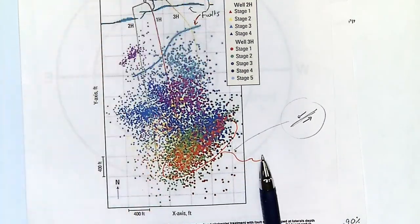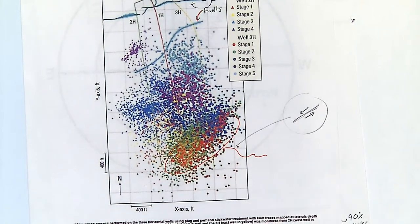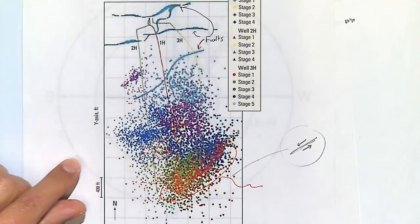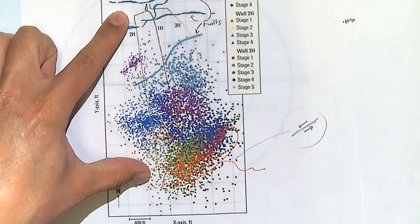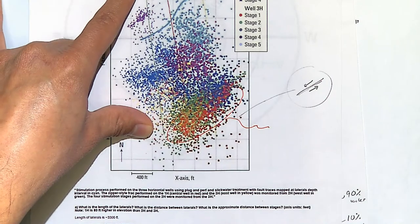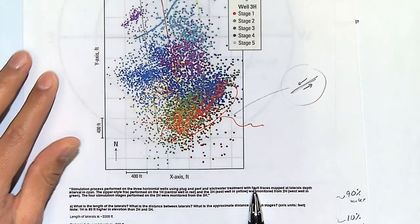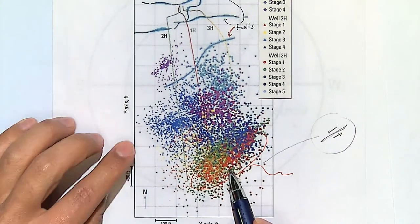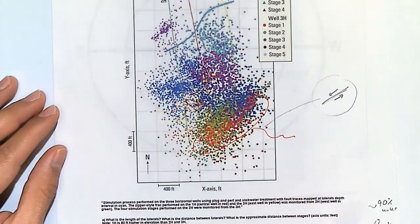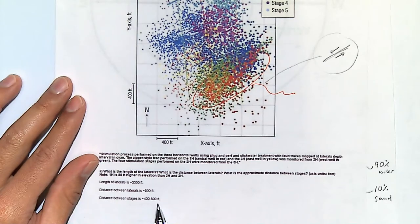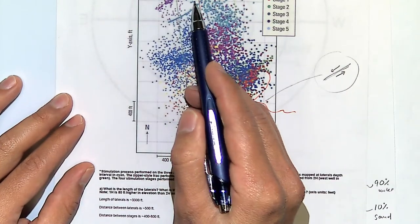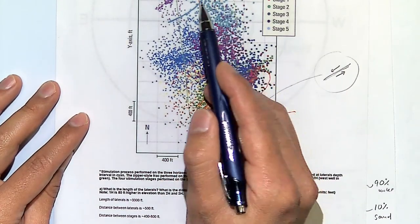The effective stimulation is mostly at the ends of the laterals. The length of the laterals, if this 400-foot scale is correct, is about 3,300 feet according to Jeffrey's answer. The spacing between stages is about 400 to 800 feet. The spacing between laterals varies between about 400 and 700 feet.